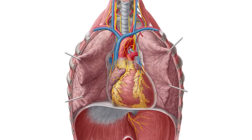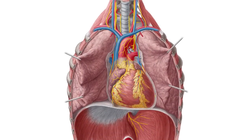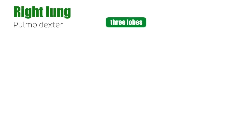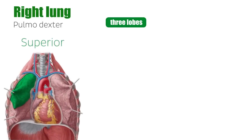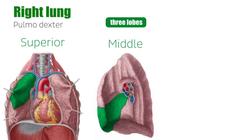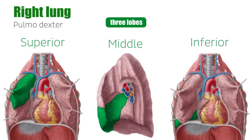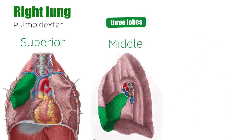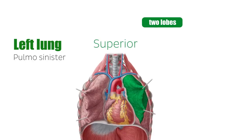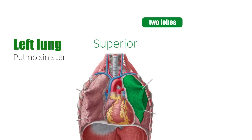The lungs are made of a light and soft elastic tissue. The right lung is larger than the left lung and is comprised of three lobes, including the superior, middle, and inferior. The left lung only has two lobes, which are the superior and inferior.